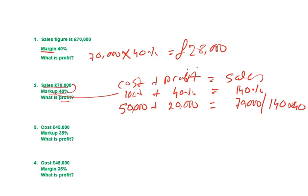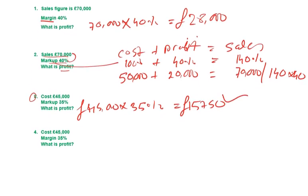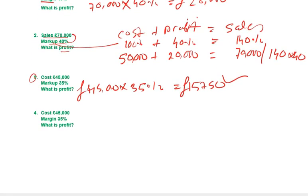Example three: cost is forty-five thousand and markup is thirty-five percent. This is straightforward — you simply do forty-five thousand times thirty-five percent, and the answer is fifteen thousand seven hundred and fifty.